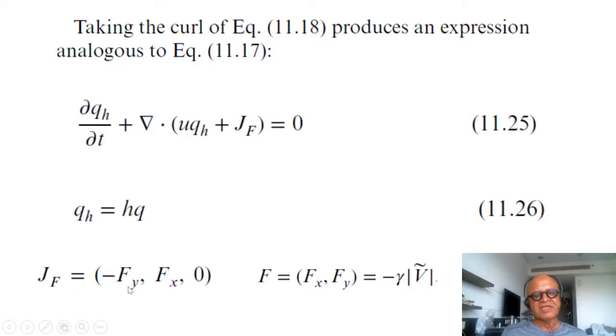So the dissipation term is again written as minus f y f x 0 because in a shallow fluid you don't have dissipation in the direction of the normal to the isentrope.